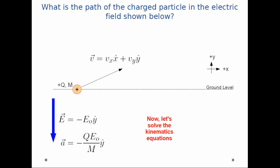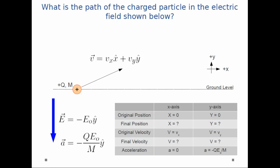Next let's solve the kinematics equations in order to determine the path. So I've just written out a table that gives all of the initial and final values for the position, velocity, and acceleration. Now in this case acceleration is uniform so it is just a single acceleration. There is no initial and final value.